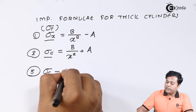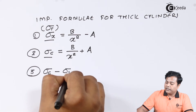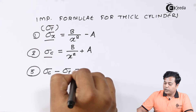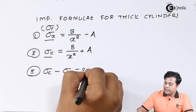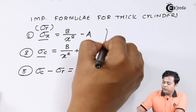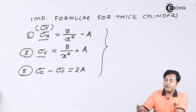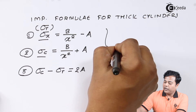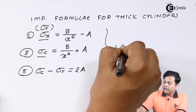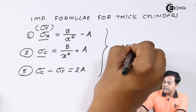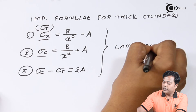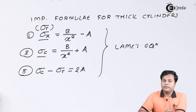The difference between the circumferential stress and the radial stress is equal to twice A. These are the important formulae which we are going to use in the analysis of thick cylinders, and they are all given by Lamy's equation or Lamy's theory.